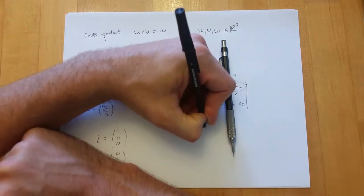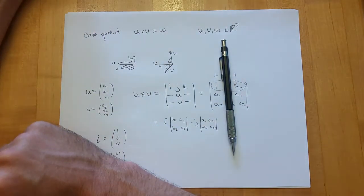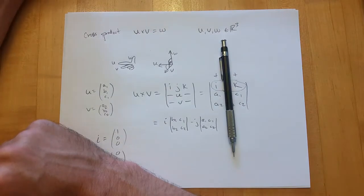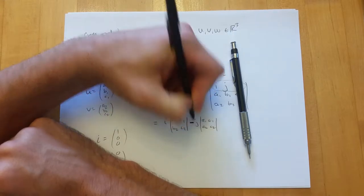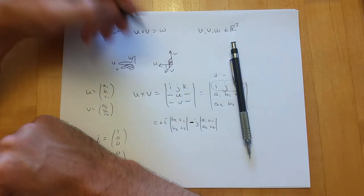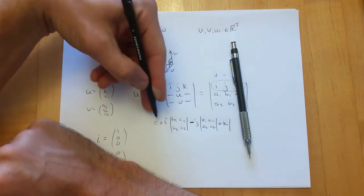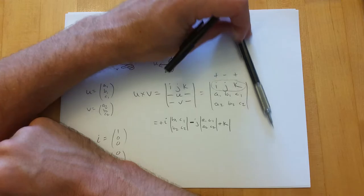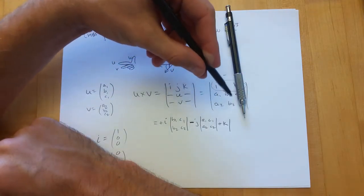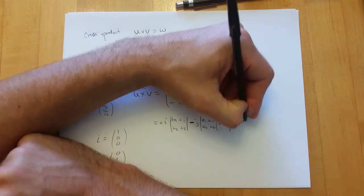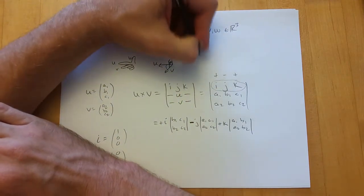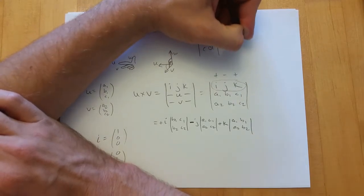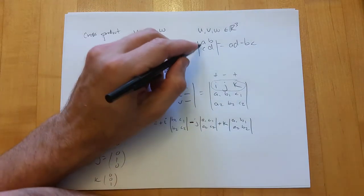For the submatrix off of j, cover up the j column — that gives the i-k submatrix: a1, c1, a2, c2. I strongly recommend having two pens when doing this, because you cover it up with pens. This determinant method is equivalent to the algebraic definition of cross product and works well for computation.